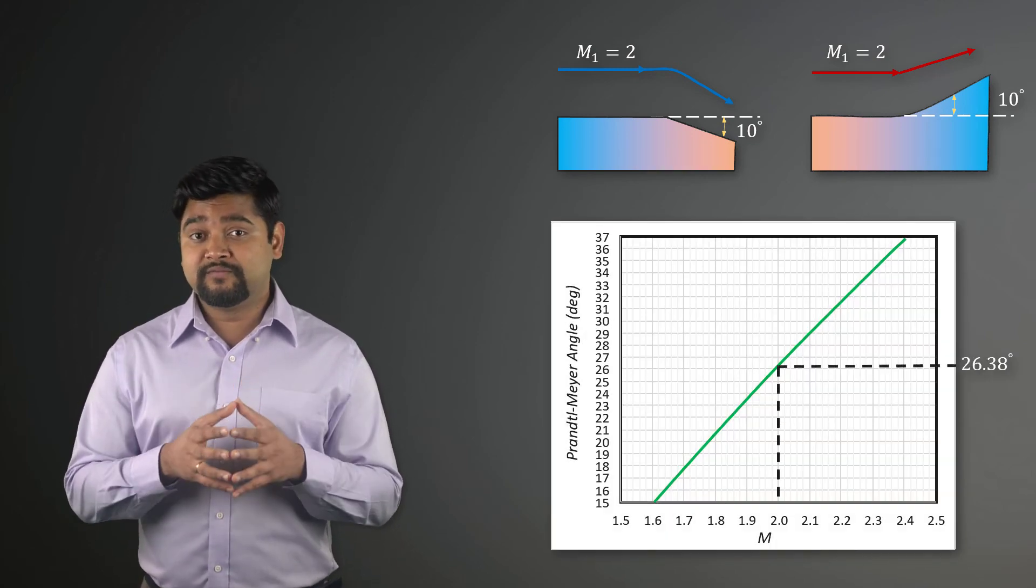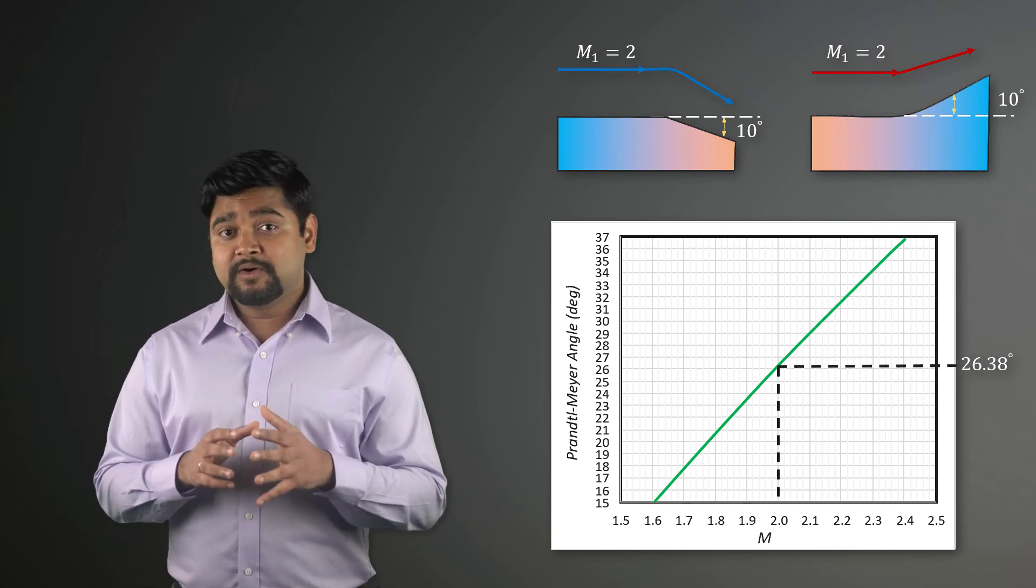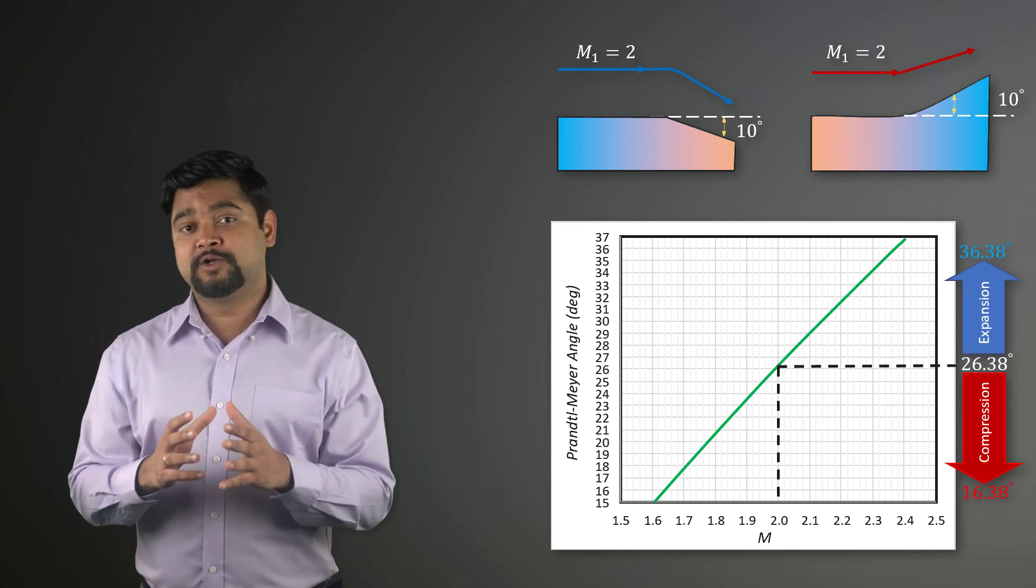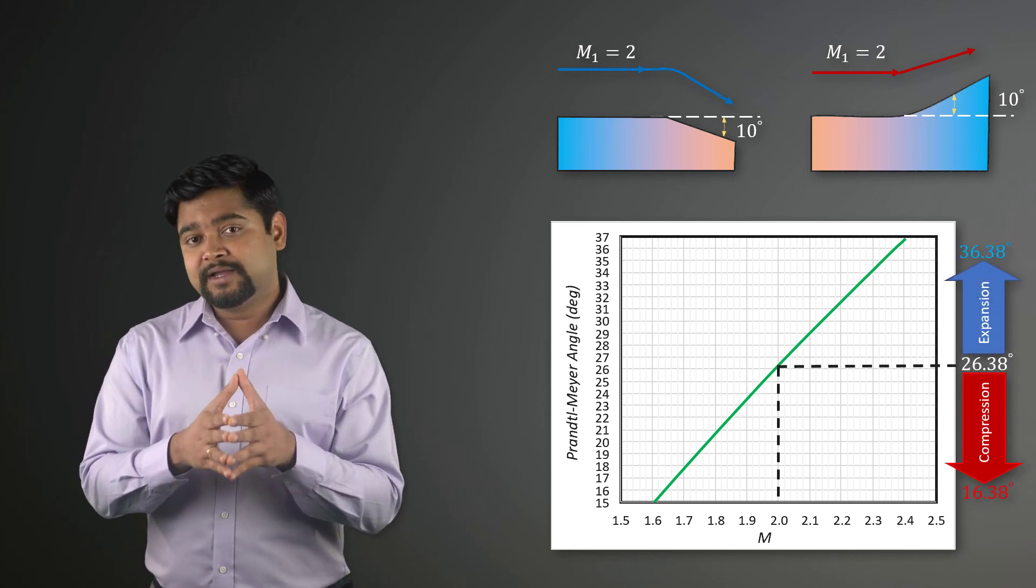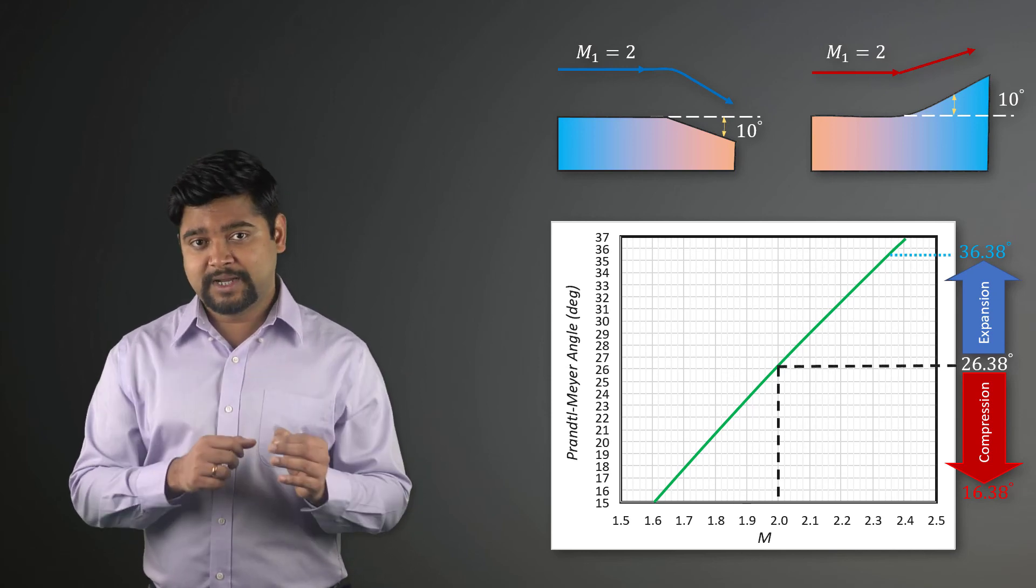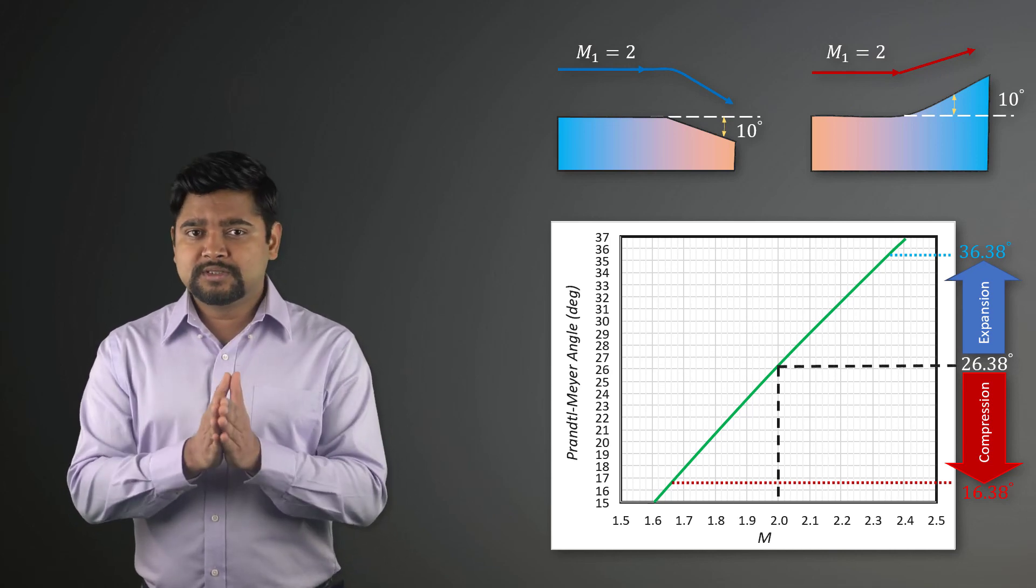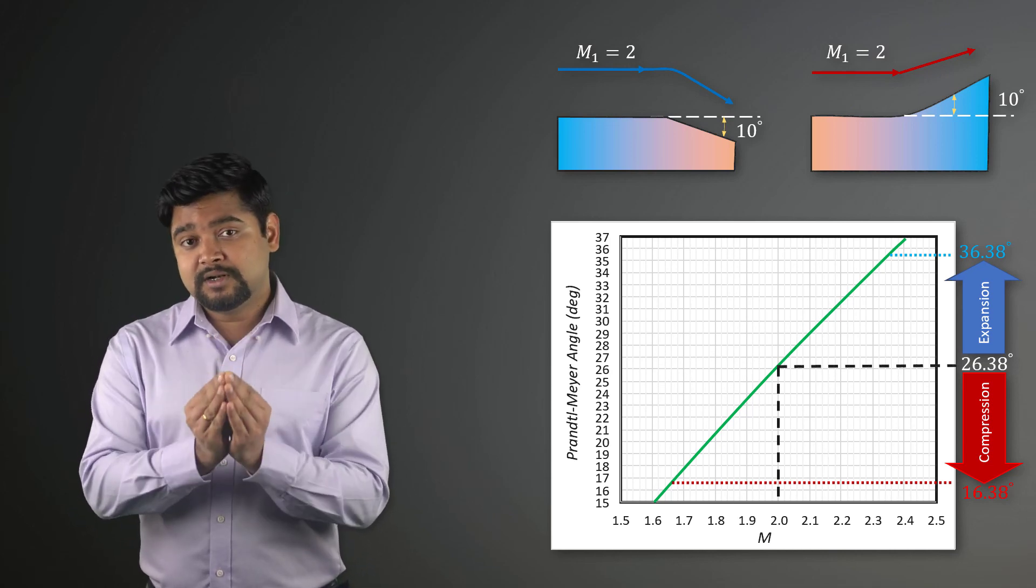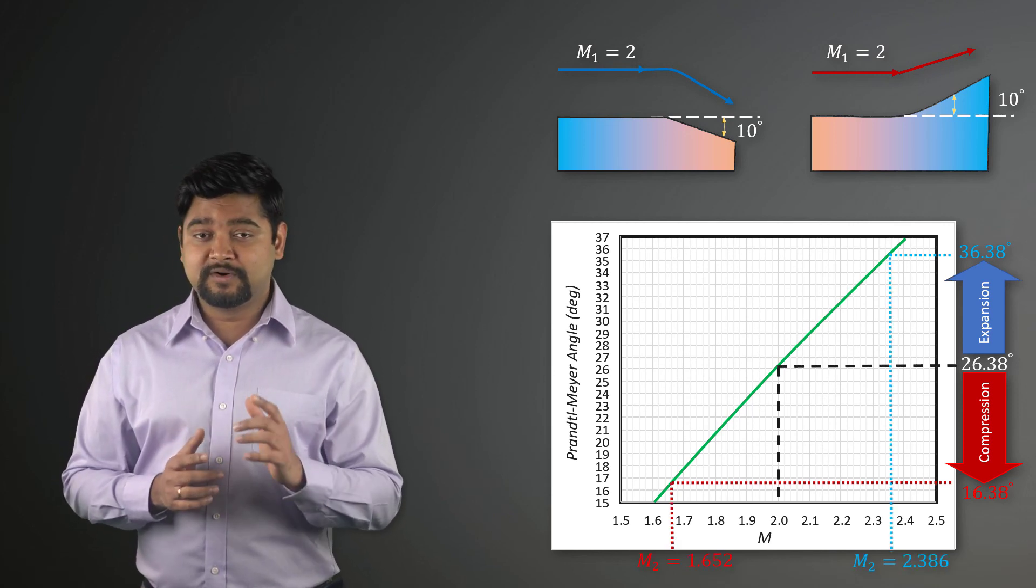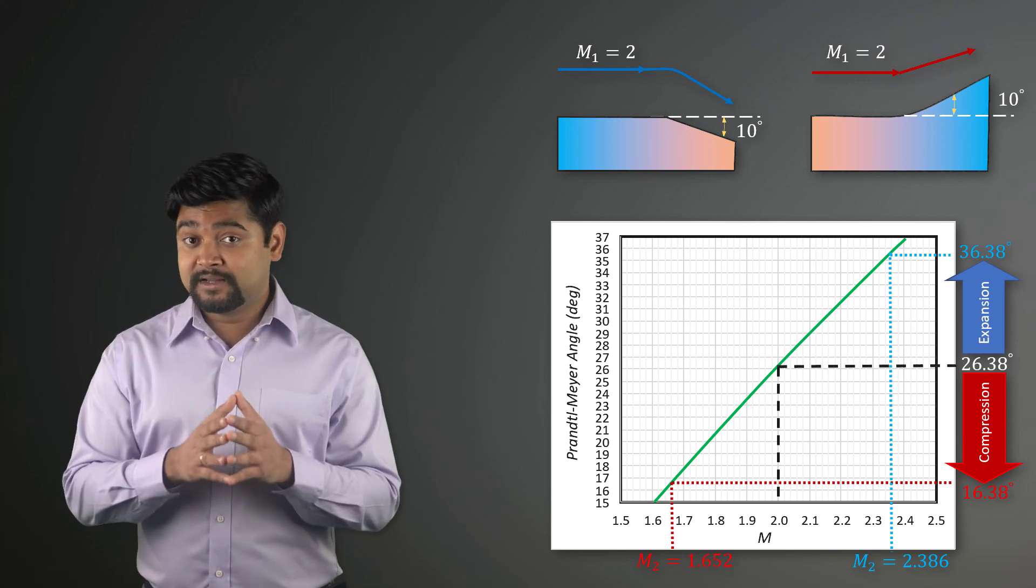Depending on whether the flow encounters an expansion or a compression of theta 2 equals 10 degrees, we get nu M2 of 36.38 degrees for expansion and 16.38 degrees for compression. Using this, we can see that the resultant Mach number M2 becomes 2.386 after 10-degree expansion and 1.652 after 10-degree compression.